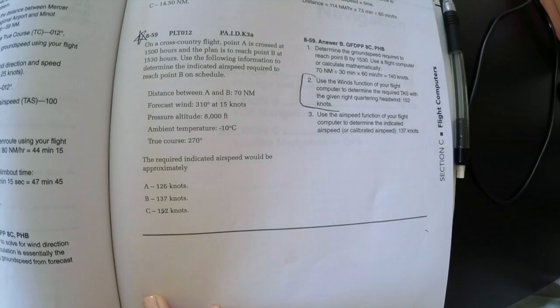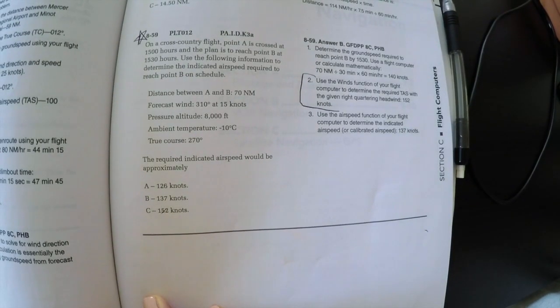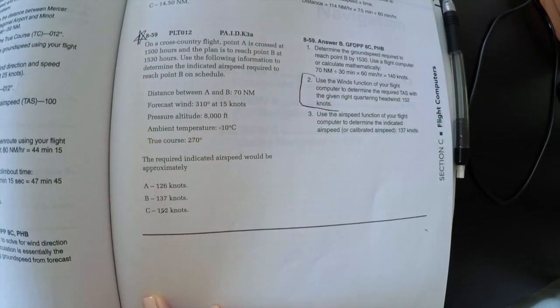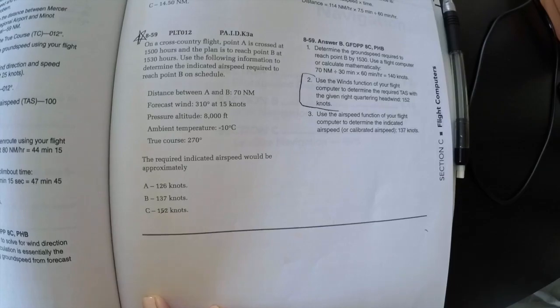So you come back to your possible answers, and you see that B is 137 knots, which is pretty damn close to 138. And it turns out that is the correct answer.